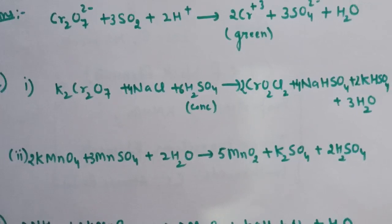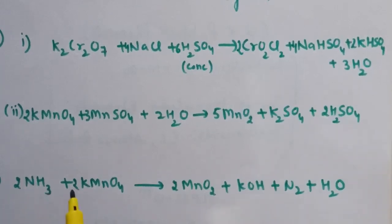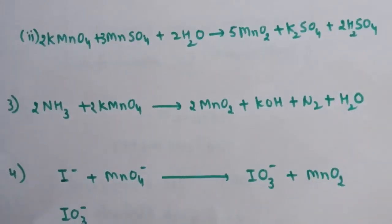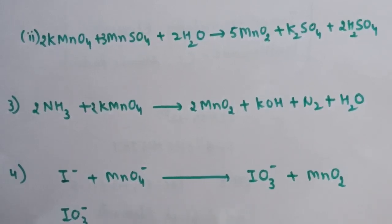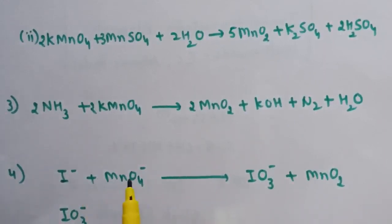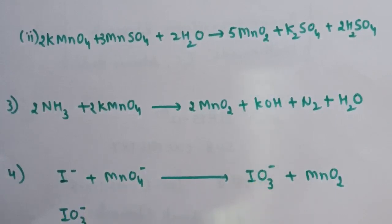Question number 3: write the balanced chemical equation for the reaction of aqueous NH₃ with KMnO₄. The reaction: NH₃ + KMnO₄ gives MnO₂ + potassium hydroxide + nitrogen gas + H₂O. In this reaction, nitrogen gas is released. Question number 4: the product of oxidation of I⁻ ions with permanganate ion in alkaline medium. In alkaline medium, MnO₄⁻ acts as an oxidizing agent and oxidizes I⁻ ions to IO₃⁻. So IO₃⁻ is the product when I⁻ is oxidized with MnO₄⁻ in alkaline medium.